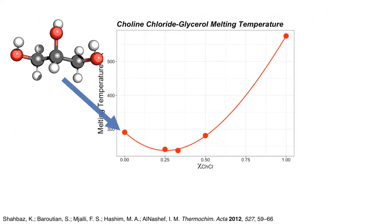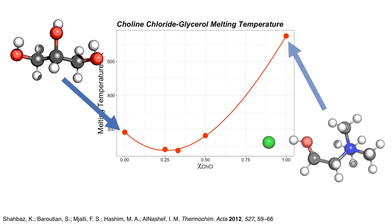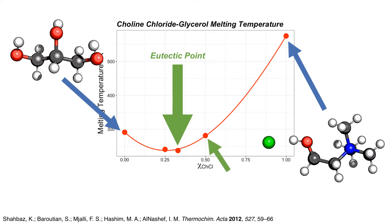Mixing of glycerol and choline chloride suppresses the melting points of both components significantly, with the eutectic point formed at one choline chloride to two glycerol molecules. Here the structures at the eutectic and off-eutectic point were studied.